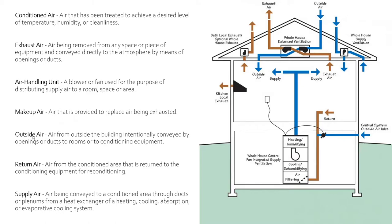Next is outside air. This is air from the outside of the building intentionally conveyed by openings or ducts to rooms or conditioning equipment. Essentially, as you condition air and pull it in, you'll have air that gets lost through bad seals, windows, people leaving the door open, or exhaust — it is the air that's pulled in to add back into the system.